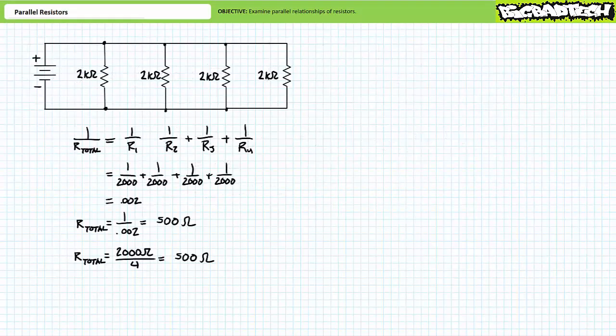For the fourth circuit, the source sees a total resistance of 500 ohms. This example illustrates an important time-saving feature for parallel circuits composed of identical resistors: the total resistance of a parallel combination of identical resistors is the resistance value divided by the number of resistors. One over the sum of four instances of 1 over 2000 ohms yields 500 ohms, as does 2000 ohms divided by four.